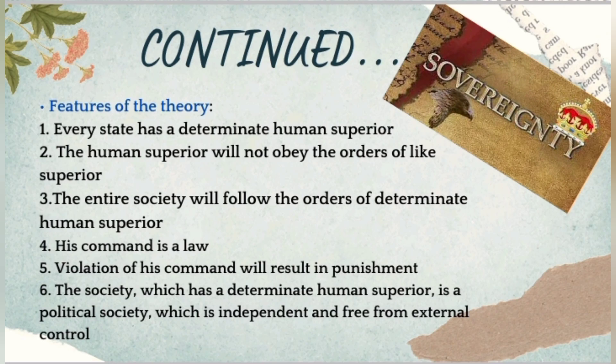The key features of the Austinian theory of sovereignty are: every state has a determinate human superior; the entire society will follow the orders of this determinate human superior; his command is the law; violation of his command will result in punishment; and the society which has a determinate human superior is a political society that is independent and free from external control.